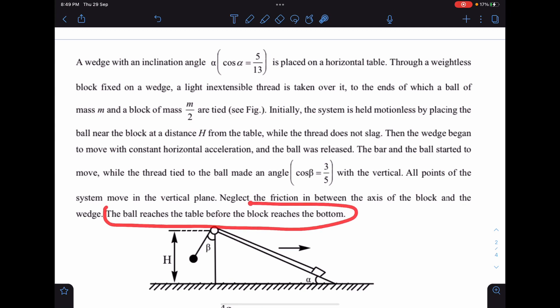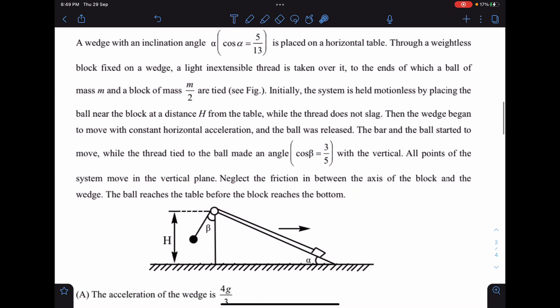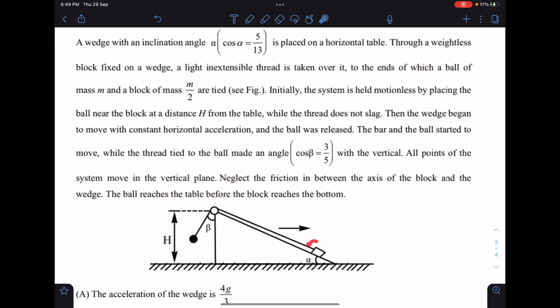Now this line becomes very important. Here the meaning of this is that this block is not hitting this because this will change the equation of motion completely for both. So it is assumed that the size of wedge is in such a way that this block is not hitting this table first. Instead of that it is somewhere in between and this ball is hitting the ground first or table first.